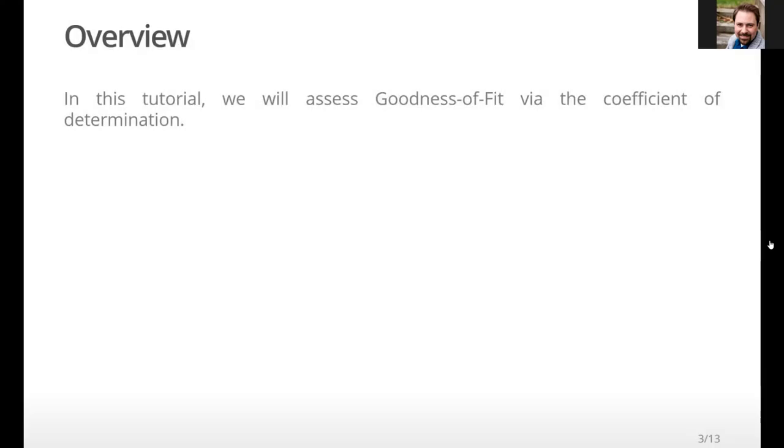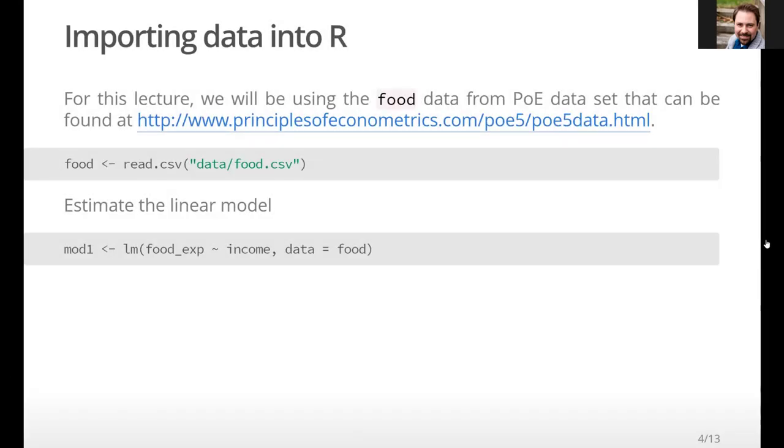And really, what we mean by goodness of fit is how closely our model actually fits the actual data. So the predictions that come out of our model, how close do they come to the actual values of the dependent variable that we're trying to predict? So let's keep moving forward, and we're going to start out this tutorial the same as in the previous tutorial, where we're going to load data.